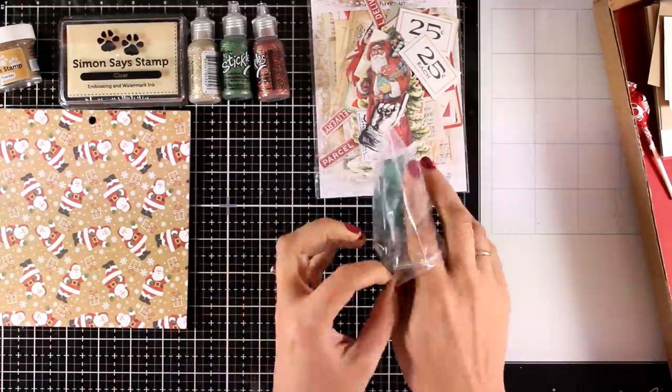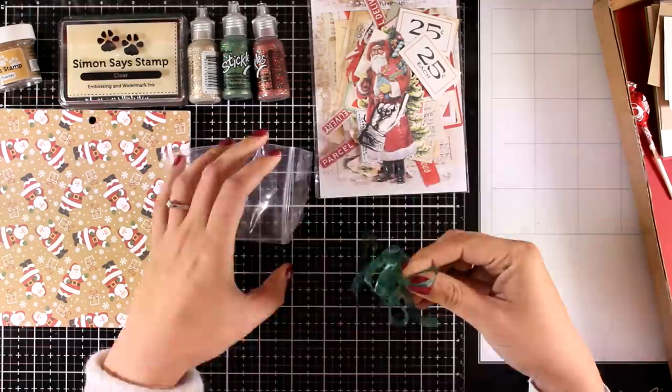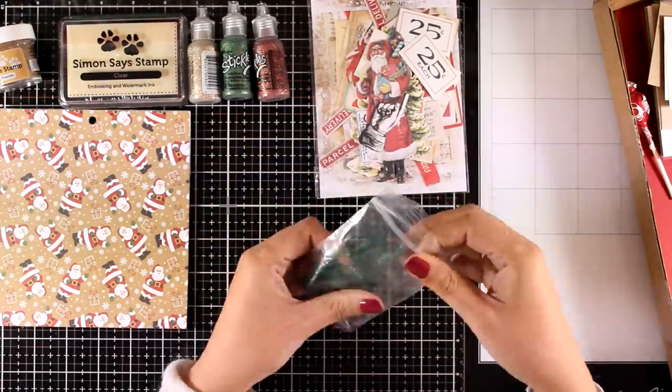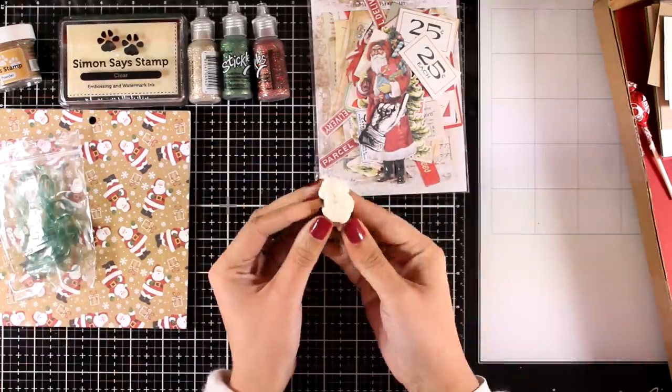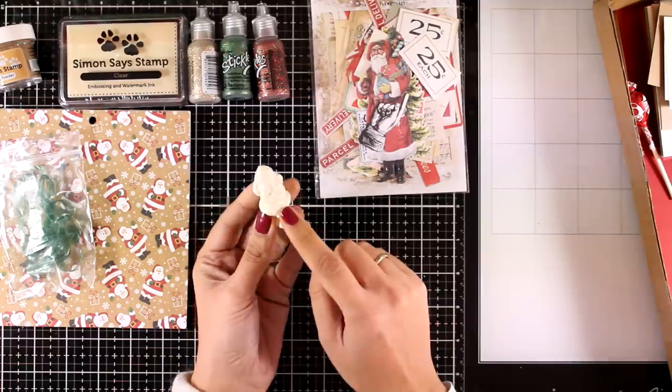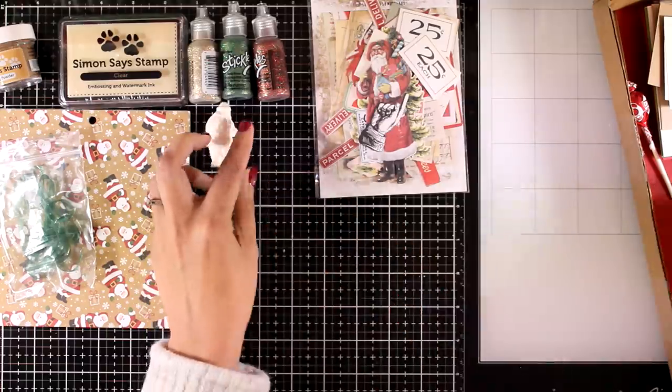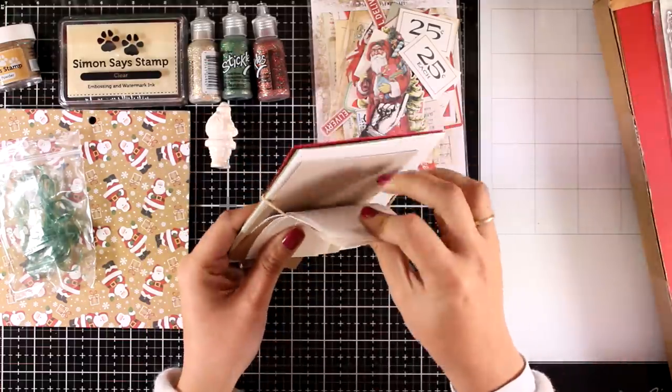As you can see, they are six by six, double-sided with lots of patterns. The papers are by Echo Park from their Celebrate Christmas collection. You also get this ribbon, a green ribbon by May Arts, a little Santa—it's one of those Tim Holtz dolls that you can ink up and use on your three-dimensional projects.